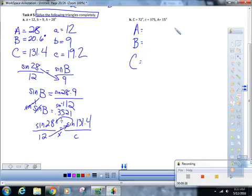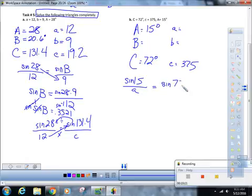One more on this page. We got A is 15 degrees, C is 72, and C is 375. Let's find A first. Max? Sine of 15 is to A, like sine of 72 is to 375. Cross multiply, and then divide. What do you get for little a? 102.1. Now, somebody find me angle B using subtraction. 93.